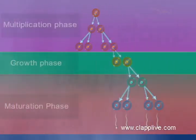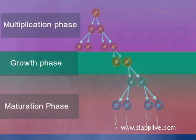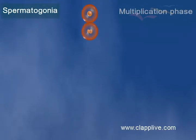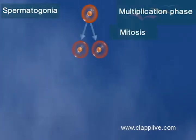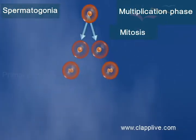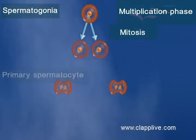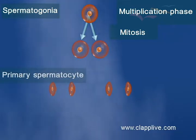Spermatogenesis completes in three phases. The process begins with the multiplication of spermatogonia. Each spermatogonia again divides into two diploid primary spermatocytes.